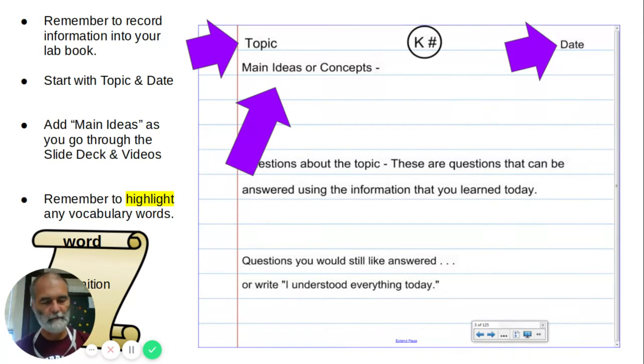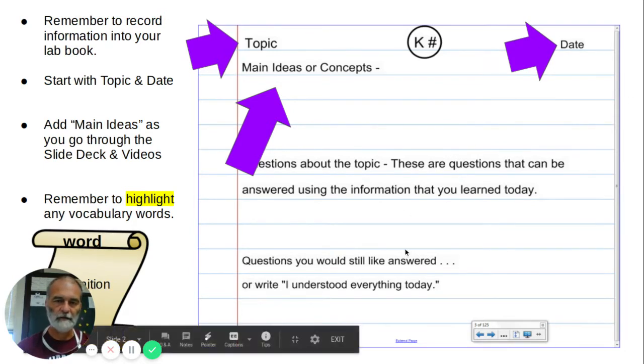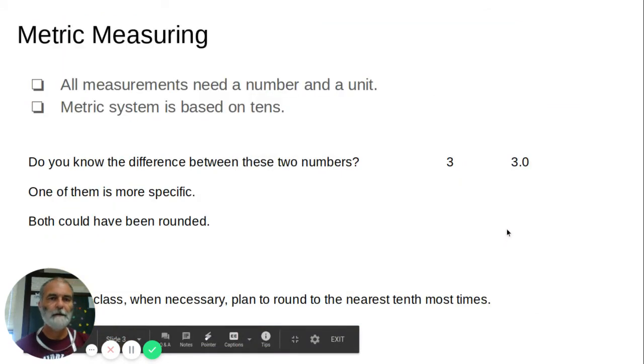Highlight the vocabulary, but you don't need to write the words and definitions because they're already in Quizlet. Just put a word or something that helps you to associate something with that vocabulary definition as we go through. Then when we get to the end, we'll do these other parts that are here.